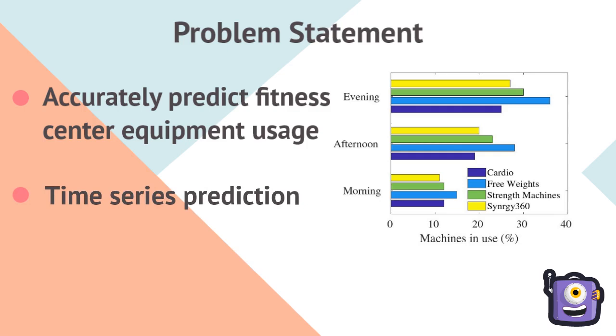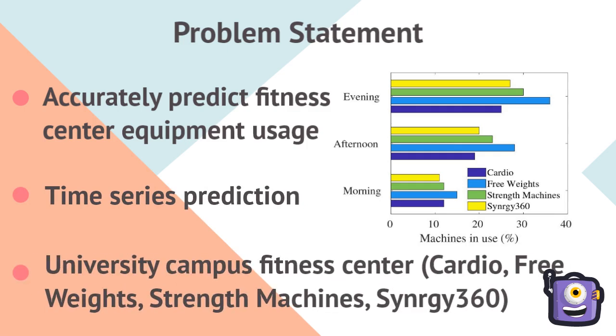We collect machine usage data from a university campus fitness center for four machines: cardio, free weights, strength machines, and Synergy 360, for three time periods during the day: morning, afternoon, and evening.